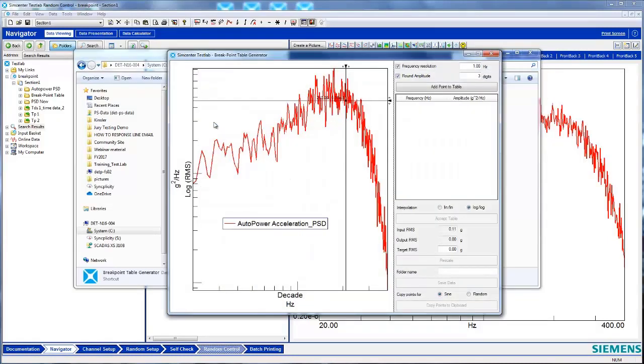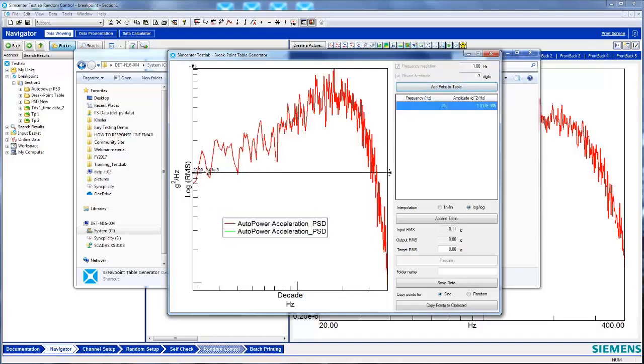The curve in the input basket automatically imports into the tool. Use this cross-haired cursor to identify where the breakpoints in the profile should be. Place the cursor at the breakpoint and then add Point to Table. Repeat this process until the entire profile is added.